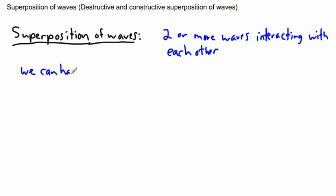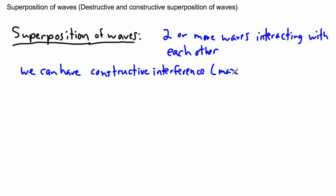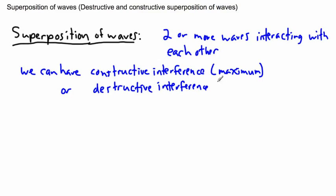We can have constructive interference, and what that means is that's when we have a maximum intensity of some kind. Or we can have destructive interference, which is when we have a minimum. But we can also have anything in the middle — these are the two extremes, but I'll just show you the two extremes here.